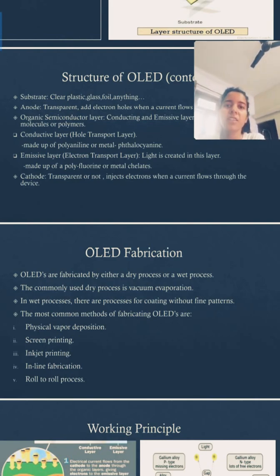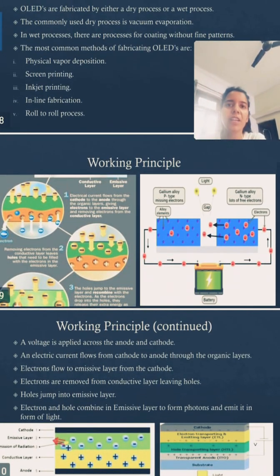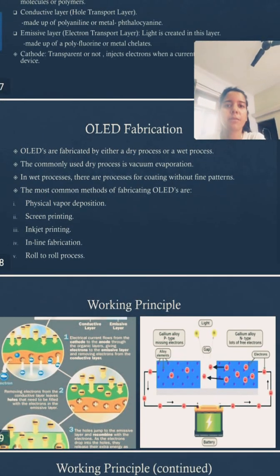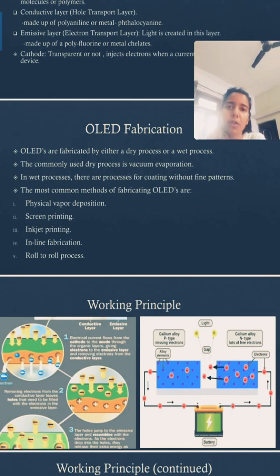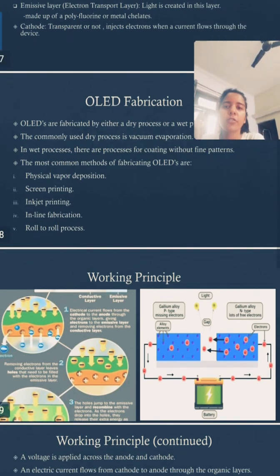The cathode may be transparent or not, and it injects electrons when a current flows through the device. Regarding fabrication, OLEDs are fabricated by either a dry process or a wet process. The commonly used dry process is vacuum evaporation. In wet processes, there are processes for coating without fine patterns. The most common fabrication methods are physical vapor deposition, screen printing, inkjet printing, inline fabrication, and roll-to-roll process.